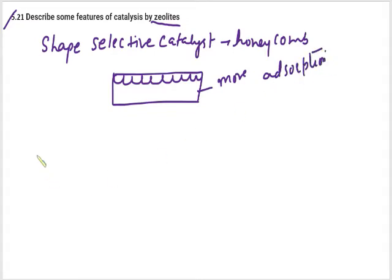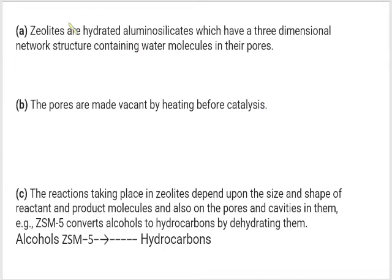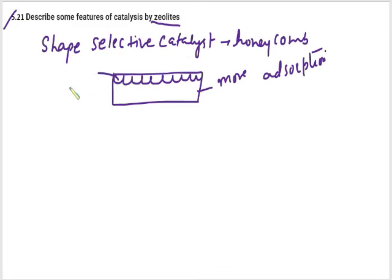After that, what do we do? These are your aluminum silicate. These are your aluminum silicate. So we can say zeolites are the hydrated aluminum silicate. Actually, what do we do? These pores are the hydrating aluminum silicate.